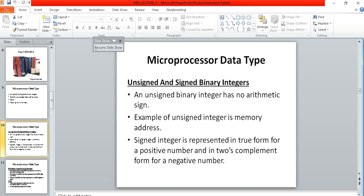You have to understand that signed integer is represented in true form for a positive number. Signed integer can be both positive number and negative number also. It's in true form for positive number, it's in simple form, but when it is a negative number you have to do the two's complement.